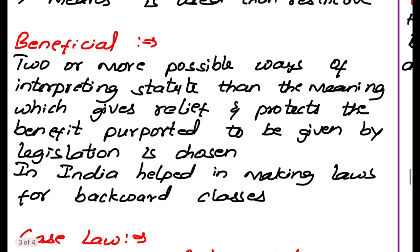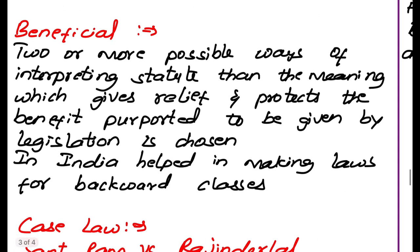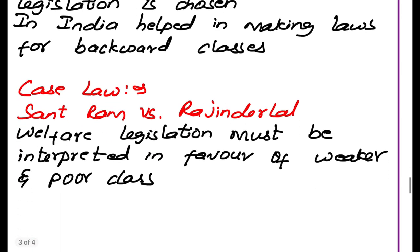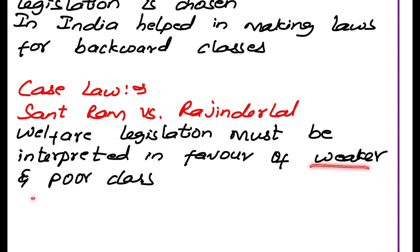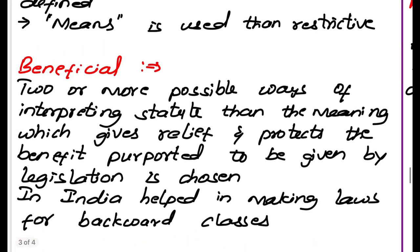Beneficial construction is different from restrictive construction. If there are two or more possible ways of interpreting a statute, then the meaning which gives relief and protects the benefit purported to be given by legislation is chosen. In India, this approach helped in making laws for backward classes — laws are chosen in favor of backward classes. In case of welfare legislations, they must be interpreted in favor of the weaker and poorer class only.